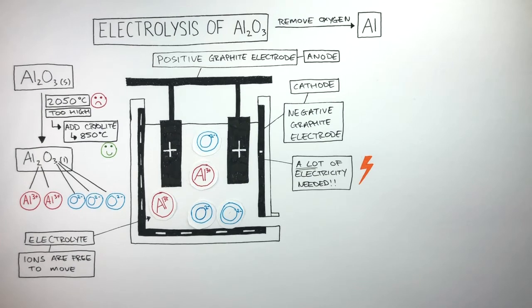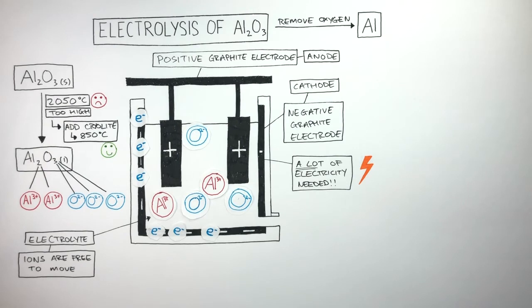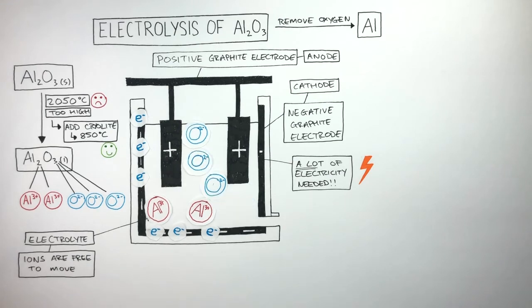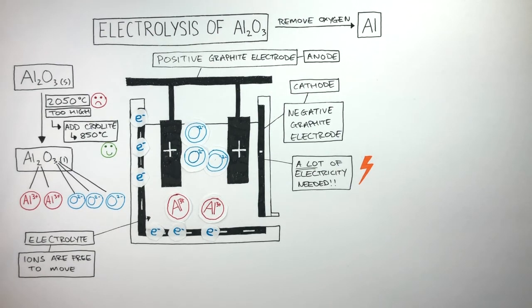What happens in the process of electrolysis is, as the electrons are flowing through the negative electrode, the cathode, the ions are free to move in the electrolyte where they are attracted to the different electrodes. The Al3+ cations are attracted to the cathode, and the O2- anions are attracted to the anode.